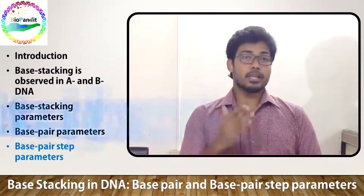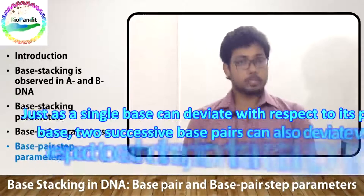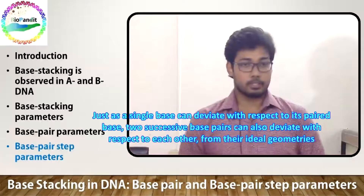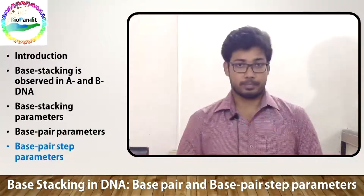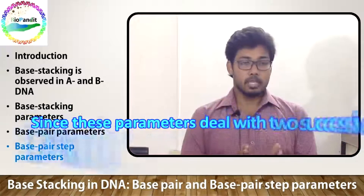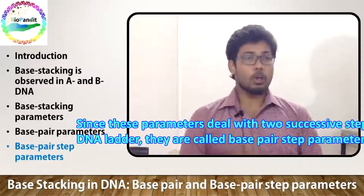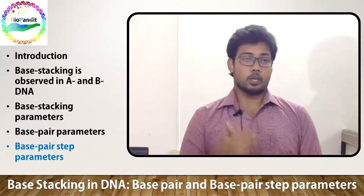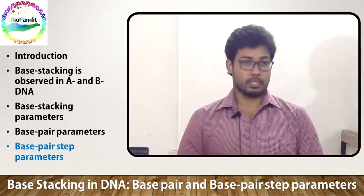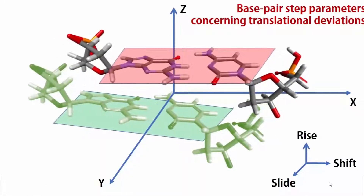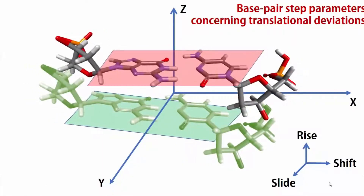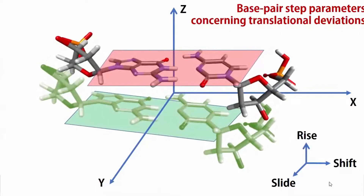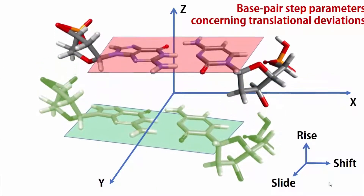Just as a single base can deviate with respect to its pair base, two successive base pairs can also deviate with respect to each other from their ideal geometries. Since these parameters deal with two successive steps of the DNA ladder, they are called base pair step parameters. The three translational parameters are: deviation along the x-axis is called shift, deviation along the y-axis is called slide, and deviation along the z-axis is called rise.